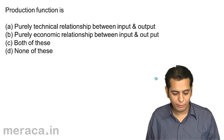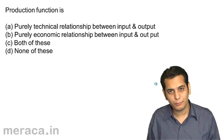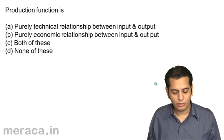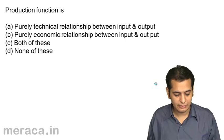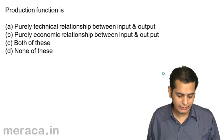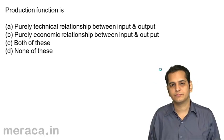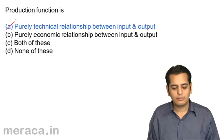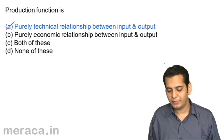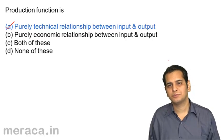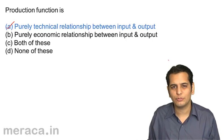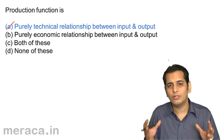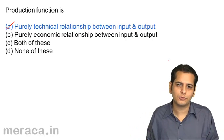Production function is: a) a purely technical relationship between input and output, b) a purely economic relation between input and output, c) both of these, or d) none of these. It's a technical relation between input and output. This is one of the assumptions wherein we say we are not concerned with the monetary terms of input and output — we only want a relation between input and output.